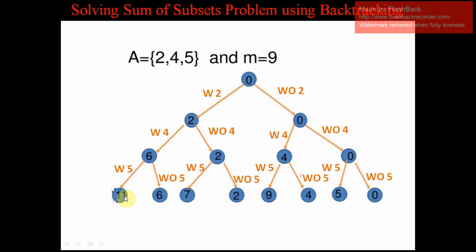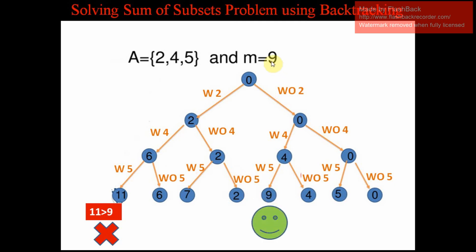From the final level we find the answer. The value 11 is greater than 9, so it is not a solution. The value 6 is not equal to 9, so not a solution. The value 7 is less than 9, not a solution. The value 2 is not a solution. The value 9 equals the given value — it is a solution! This was reached without 2, with 4, with 5, so the answer is {4, 5}. The remaining values 4, 5, and 0 are not equal to 9, so they are not solutions.